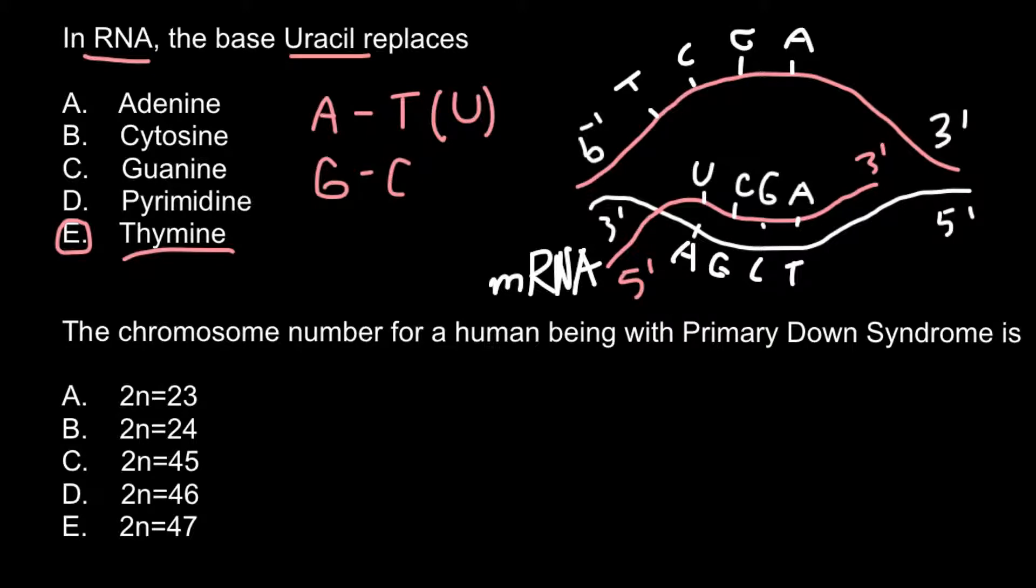Next question: the chromosome number for a human being with primary Down syndrome is, and here are five answers to choose from. Another name of this syndrome is Trisomy 21.